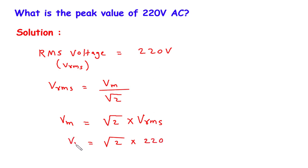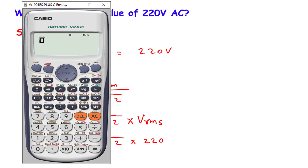This is the value of VM, that is the maximum value or peak value. So it will be equal to root 2 times 220. It is 311.12.